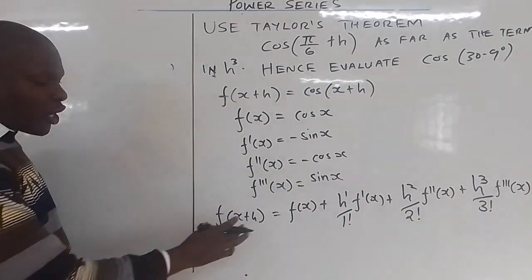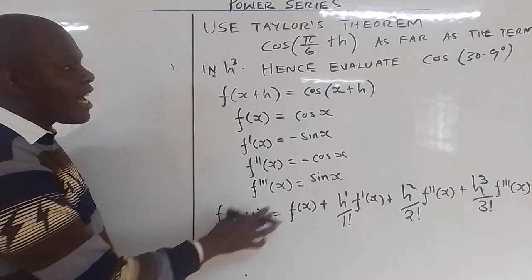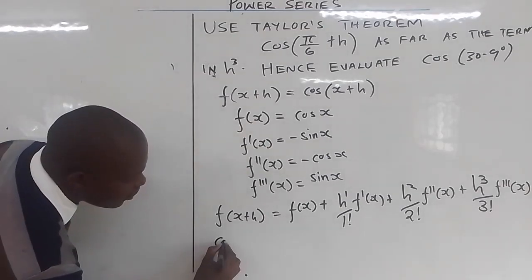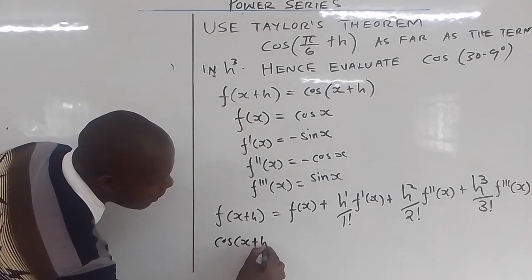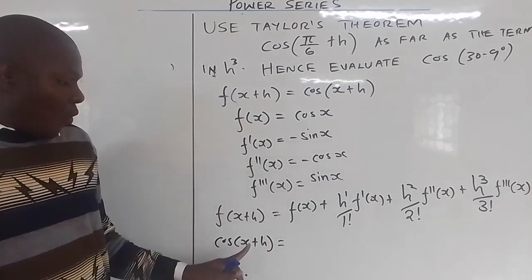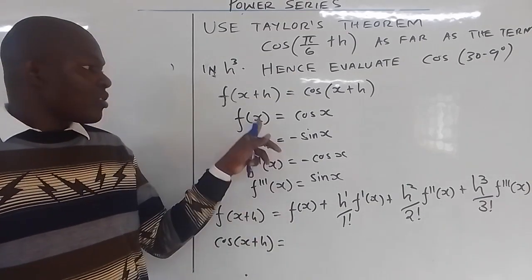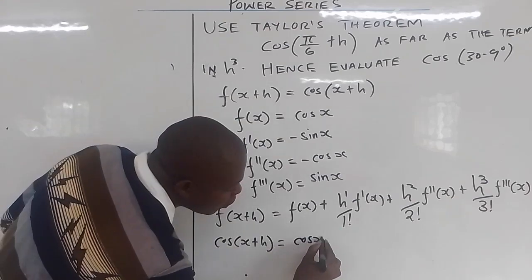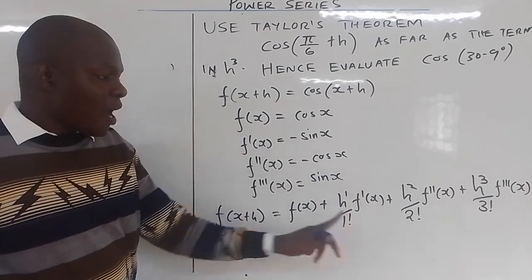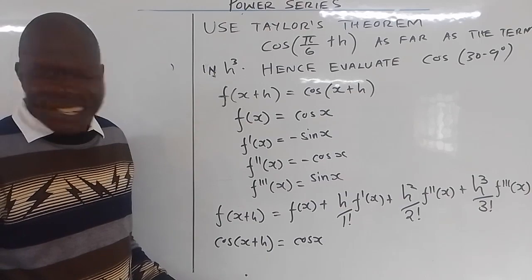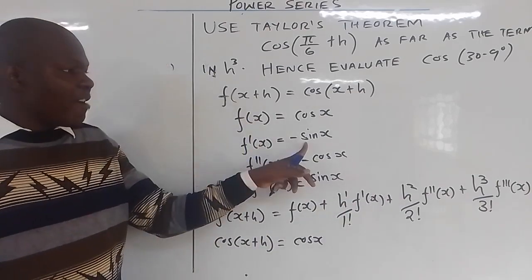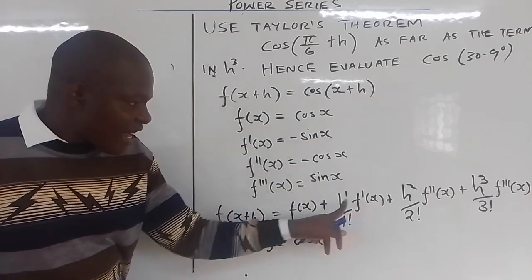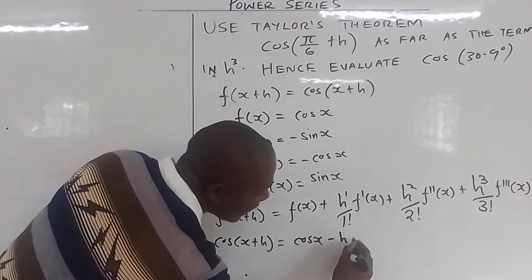Then you substitute. Your function f(x + h) is cos(x + h). Where there is f(x), you put cos(x). That gives cos(x), then h raised to power 1 over 1 factorial — that's just h. Then what is f'(x)? It is negative sin(x), so negative sin(x) times h gives minus h·sin(x).